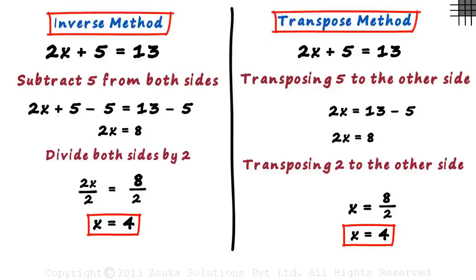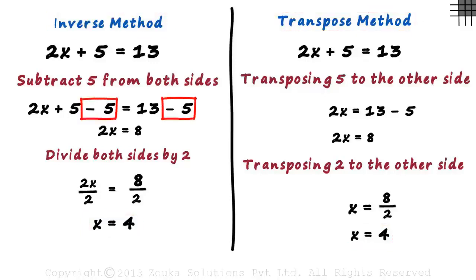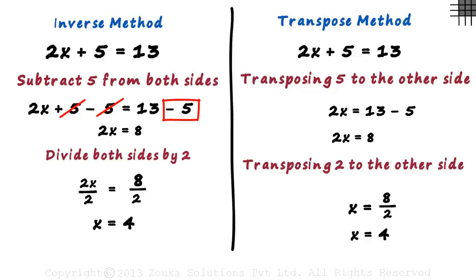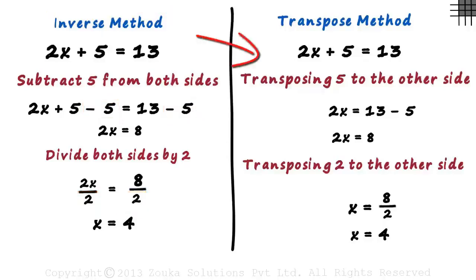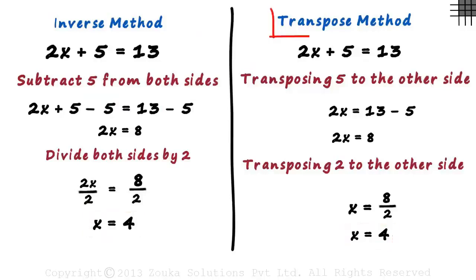The transpose method is actually the same as the inverse operations method. Instead of subtracting 5 from both sides, we transpose 5 to the other side — it's the same thing, as 5 and minus 5 cancel out, and all we are doing is subtracting 5 from the right hand side. So we avoid a couple of steps by writing the steps directly. In the inverse operations method, we use more terms to eliminate terms on the left hand side; here we just transpose them to get the same result. In our videos, we will be using the transpose method.